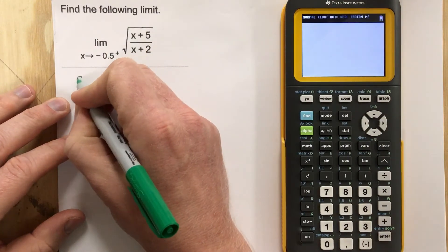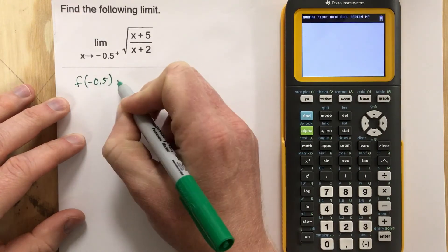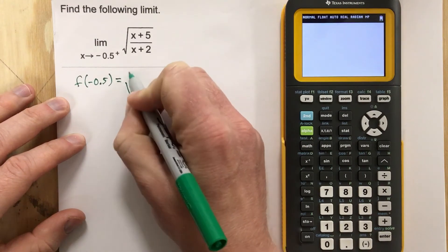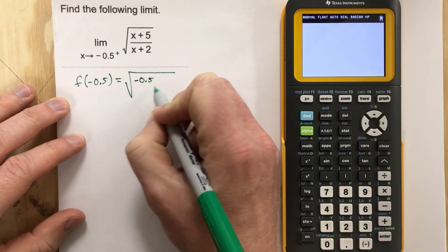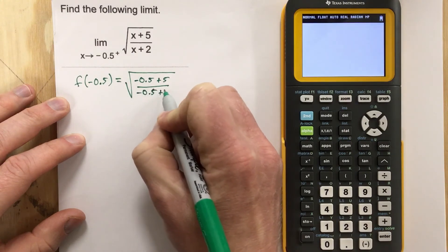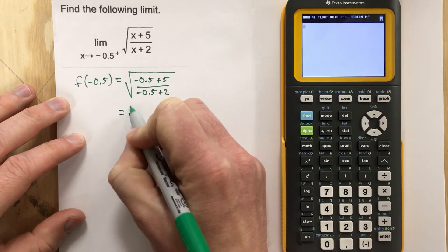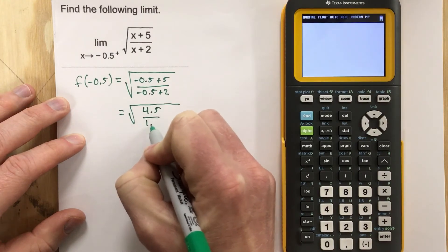So we're really just going to look at f of negative 0.5 equals the root of negative 0.5 plus 5 over negative 0.5 plus 2. That's going to give you the root of 4.5 over 1.5.